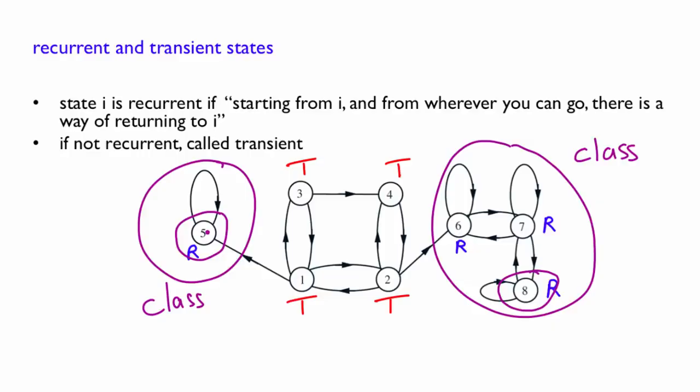The existence of more than one class of recurrent states, like in this example, in a Markov chain will be the telling sign that initial states will matter in that chain. It's pretty clear here that if your Markov chain starts in state 5, you will never end up in states 6, 7, or 8. And if you start in one of the states 6, 7, 8, you will never end up in state 5. So depending on where you started, the long range probability of being eventually in state 6 will not be the same.